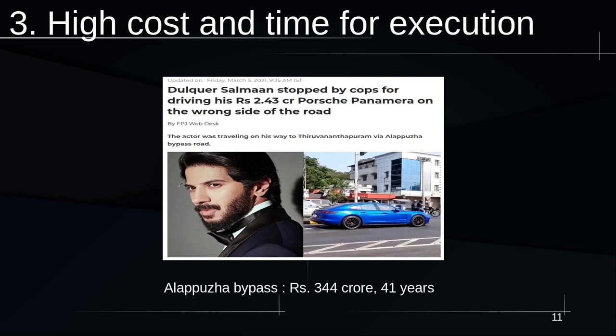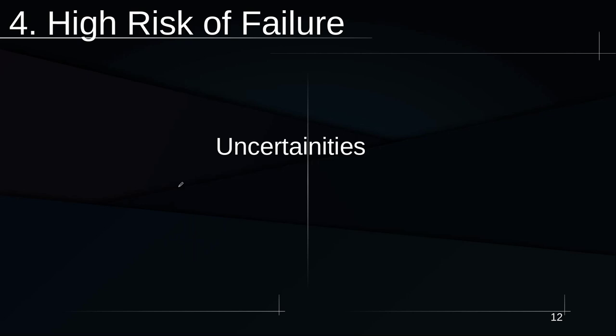The next feature is high risk of failure. There are many uncertainties involved with construction projects, and failure doesn't just mean buildings falling down. Falling buildings can result from unexpected geological conditions, earthquakes, or tsunamis. There are also other types of failures — like the Alapura bypass taking 41 years — due to problems with land acquisition, delays, or projects ending prematurely.